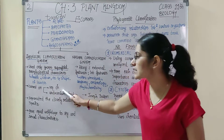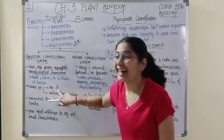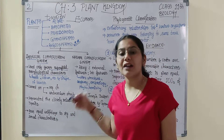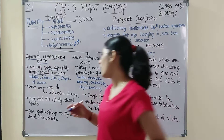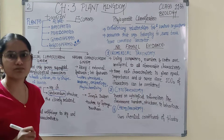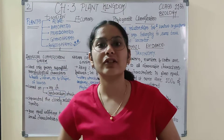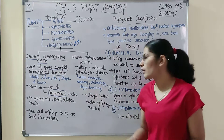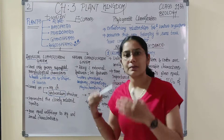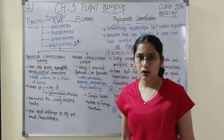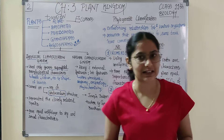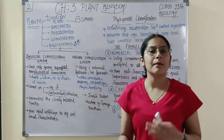This classification system is based on vegetative characteristics and on the number or structure of the androecium. I hope you are aware of androecium — androecium and gynoecium. Androecium is the male reproductive part. So the number of the androecium and the structure of the androecium are the basis on which this system works, along with vegetative characteristics like habit, color, number, and shape of leaves.